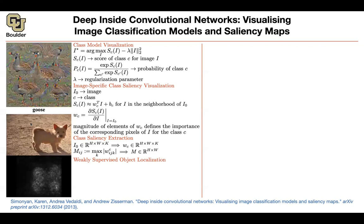Another question: can we pick an image of our own choosing of a certain class and evaluate what the network is looking at? Exactly — all you need is an image and the corresponding class, then look at the derivative of that score for that class with respect to the image. Another question: does this have to be the correct class? Not necessarily — it doesn't have to be the highest score class; it could be anything.